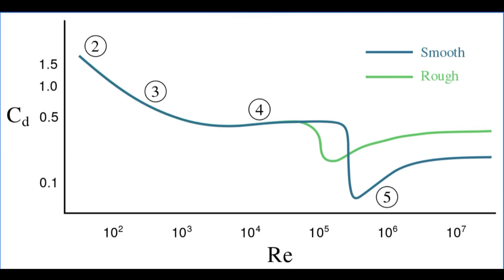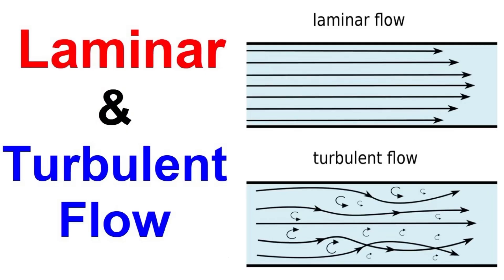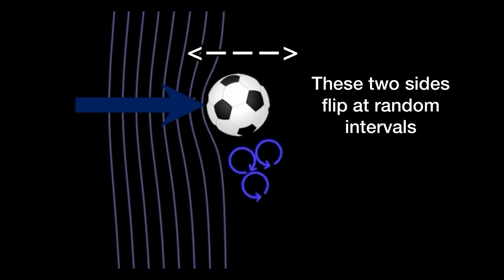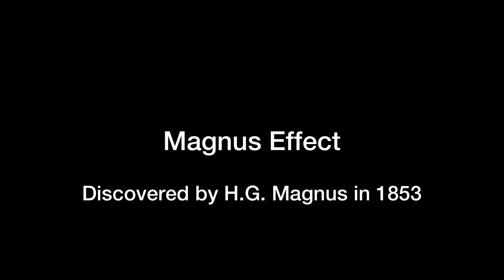Why does a rise in Reynolds number cause a drop in drag coefficient, and why does this cause the ball to move side to side? Consider two things: laminar flow, where a fluid flows smoothly, and turbulent flow, where a fluid flows more radically. The large drop in drag coefficient occurs because the ball transitions from laminar to turbulent flow. This interacts with the ball's boundary layer, and each side of the ball has a different flow which flip-flops at random intervals — that is precisely what causes the random, erratic movement of a knuckleball.